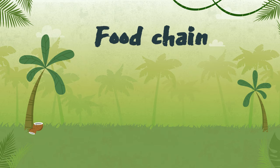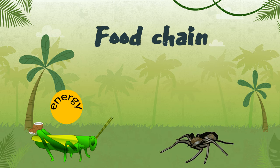A food chain shows how energy is passed between living things. Arrows show the direction the energy moves.